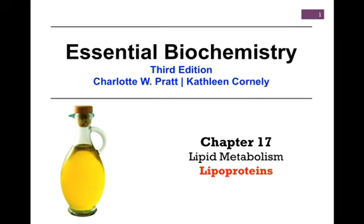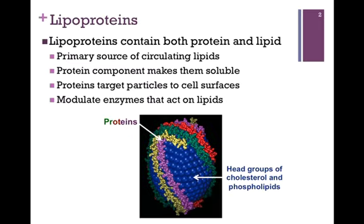In our next lesson on Chapter 17, Lipid Metabolism, we want to consider lipoprotein particles. As the name suggests, these particles contain both protein and lipid components. These are our primary source of circulating lipids — in other words, our primary means of delivering lipids to and from cells.